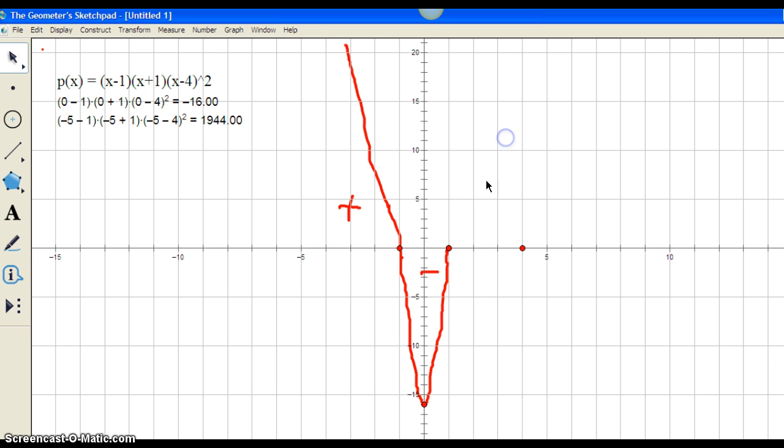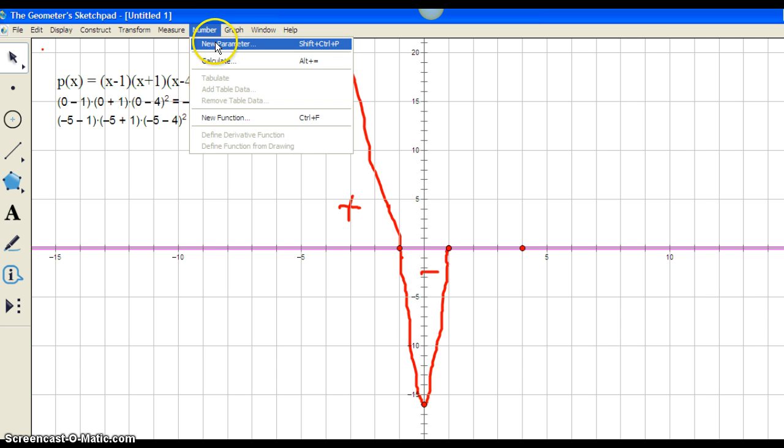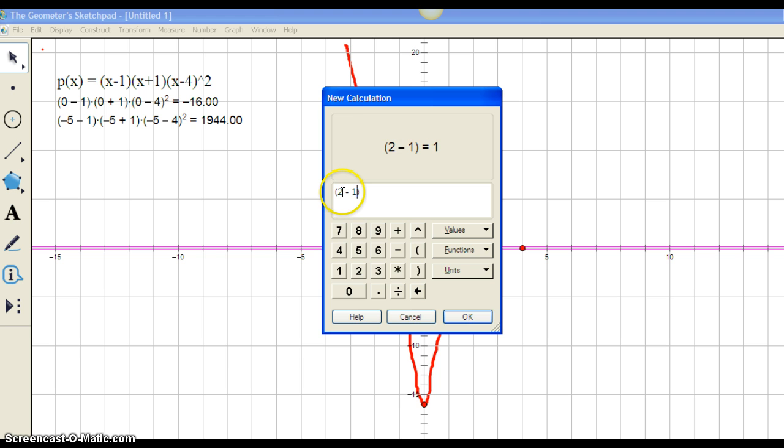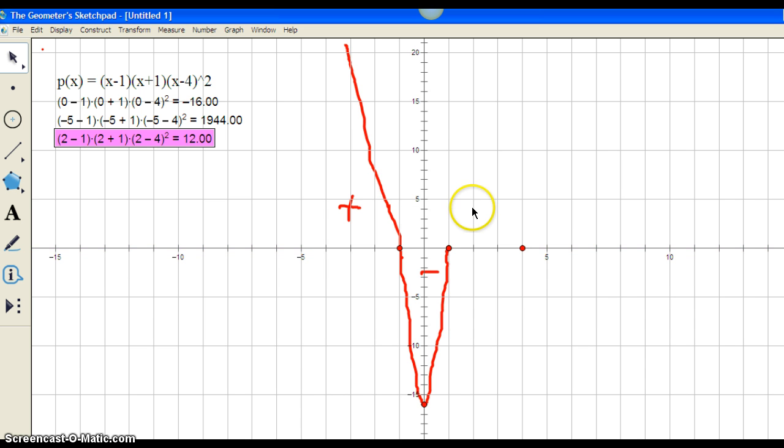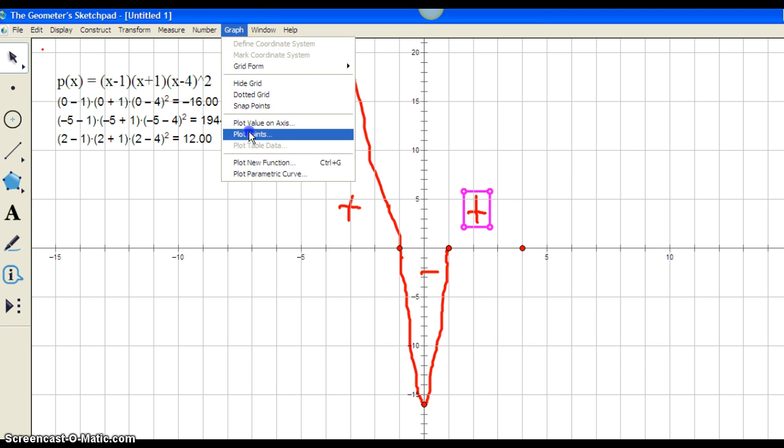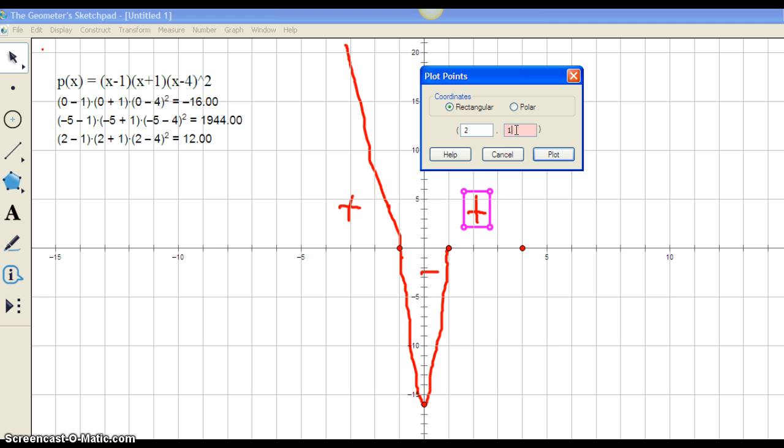Now I have to determine in between these two zeros. So let's pick the point x equals 2 and substitute it in and find out what the value of p of x is. So 2 minus 1 times 2 plus 1 times 2 minus 4 quantity squared. And our answer is 12. So you can see that in between here, the function has positive values. I could substitute in another point, substitute x value of 3 to verify that. Let's graph the point 2, 12.